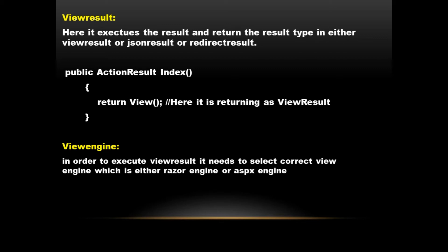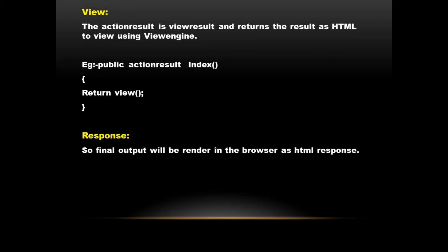After executing the view result, it selects the correct view engine — either the Razor engine or the ASPX engine. If the Razor engine is used, it pushes the result to the Razor engine and it is rendered in the view. Finally, the output is seen in the browser as an HTML response.